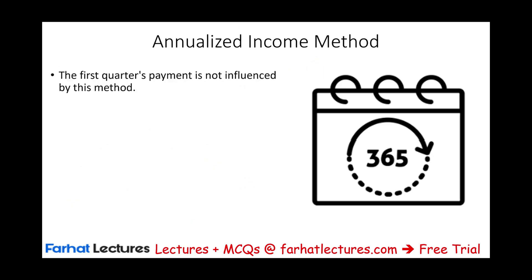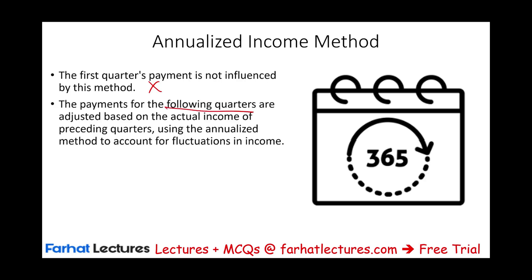The first quarter is not typically influenced by this method because the company would use 25% of the prior year tax liability — but you could use it as well. The payment for the following quarters — second, third, and fourth — are adjusted based on the actual income of the preceding quarter. So in the second quarter, we're going to look at income from the first quarter, annualize it, and base the payment on that.